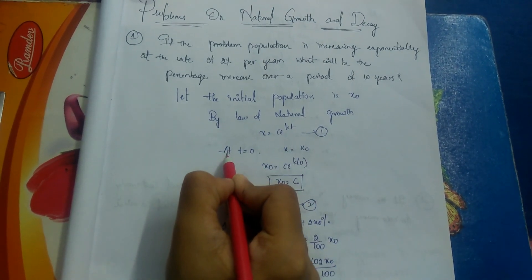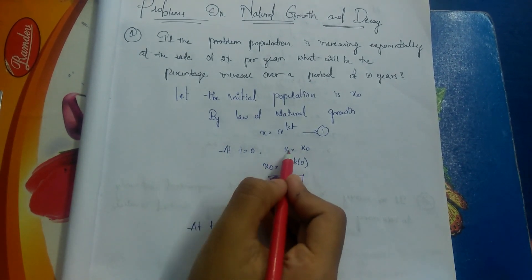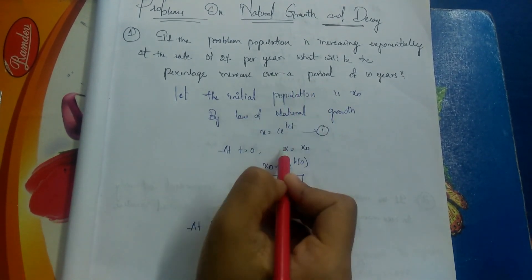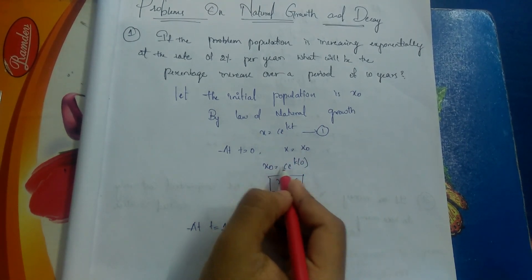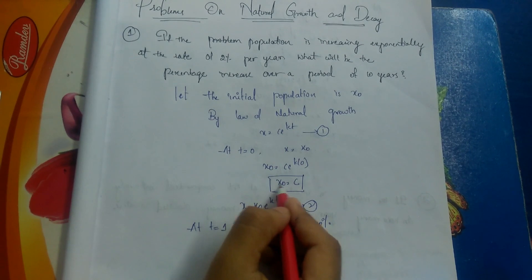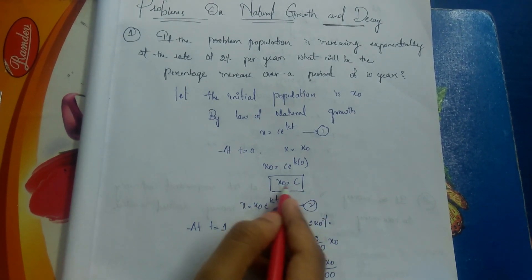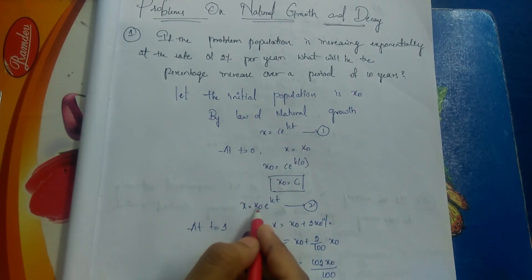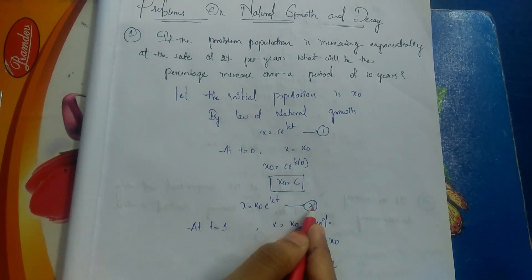At time t = 0, x = x₀. So x₀ = c · e^(k·0), which gives x₀ = c. Substituting this c value into equation 1, we get x = x₀ · e^(kt). Let this be equation number 2.